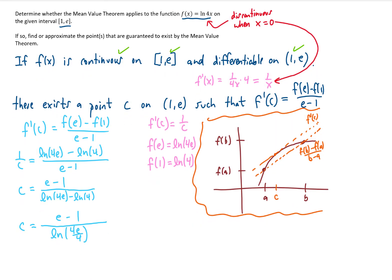Now this is pretty neat because the 4 in the argument of the natural log cancels with the other 4. That leaves us with a natural log of just e in the denominator, and the natural log of e is just 1. So we get a final answer of c equals e minus 1.